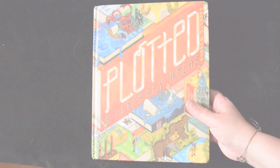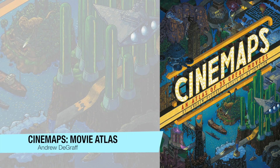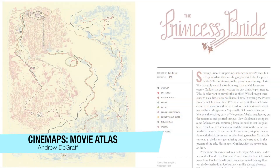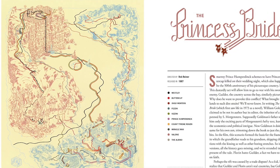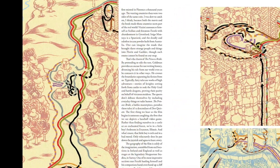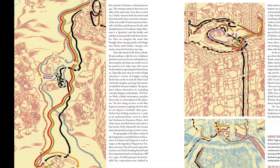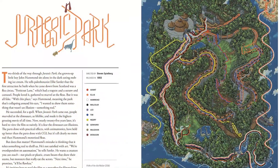The same artist also created an atlas called Cinemaps, which does the same thing for classic movies — for example, charting the paths of true love from The Princess Bride. Unfortunately I found the colouring productions a little muddy in this volume, but they're interesting interpretations nonetheless.